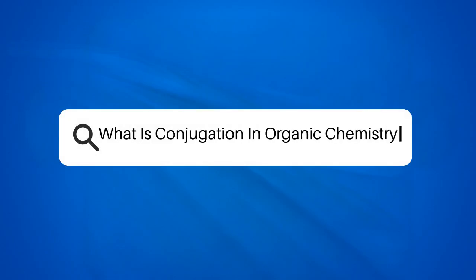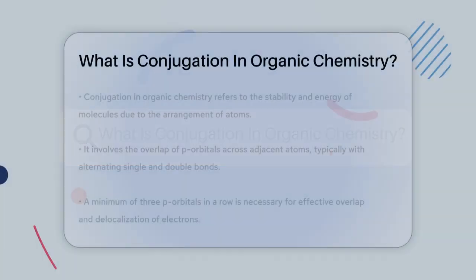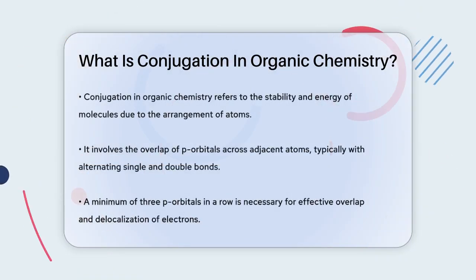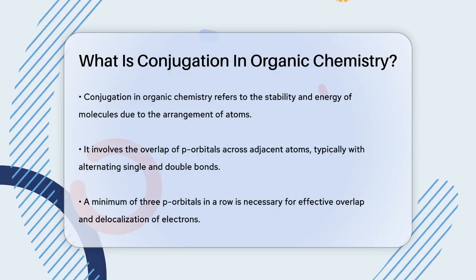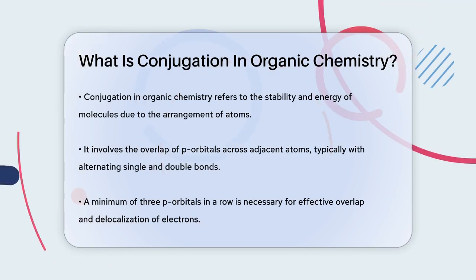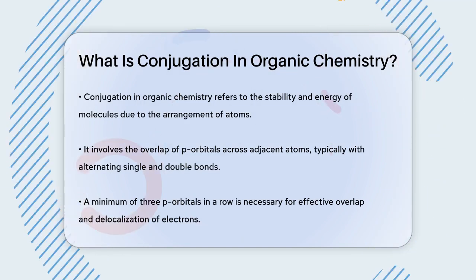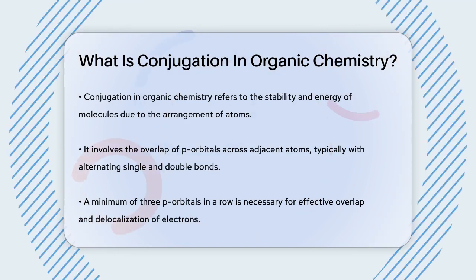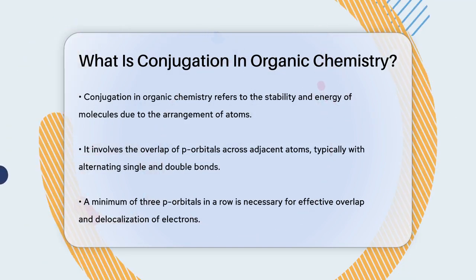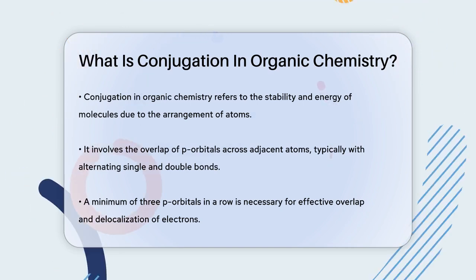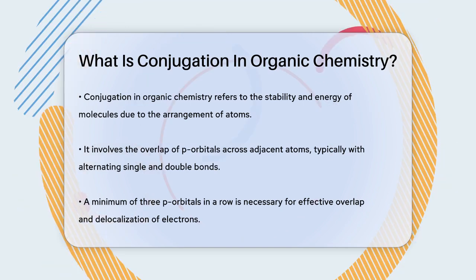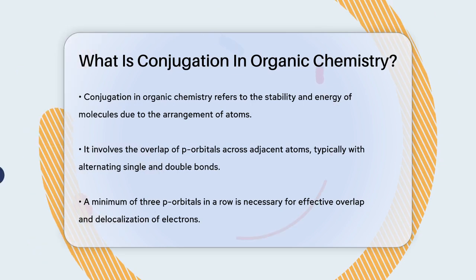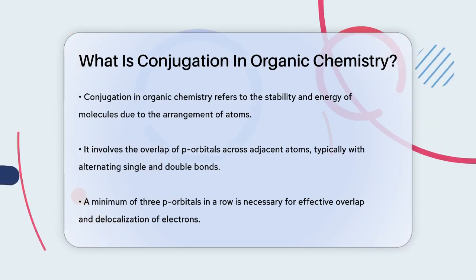What is conjugation in organic chemistry? Imagine you have a chain of atoms, each connected in a specific way that makes the whole molecule more stable and energetic. This is what happens in conjugation in organic chemistry. Conjugation involves the overlap of p orbitals across adjacent atoms, typically in a chain of single and double bonds.